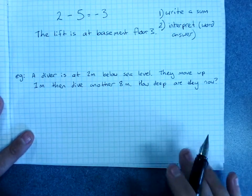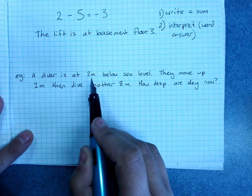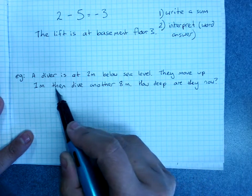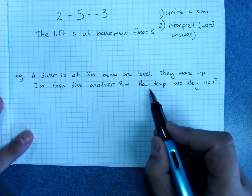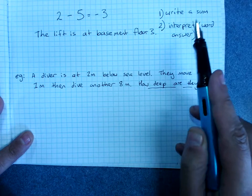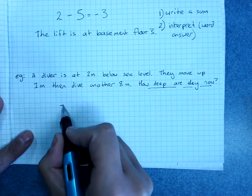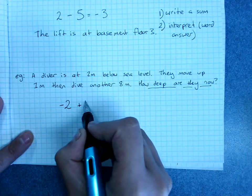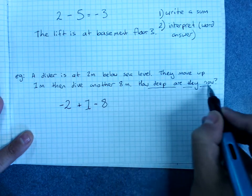A diver is at two meters below sea level, so below sea level would be negative two. They move up one meter, then dive another eight meters. Diving, going down is minus. Going up is plus. How deep are they now? This is where are we at now. So it's the same steps. Write a sum and interpret the word answer. Where do we start? We start at two meters below sea level, we start at negative two. They move up one meter plus one. Then they dive. That's going down another eight meters. How deep are they now?